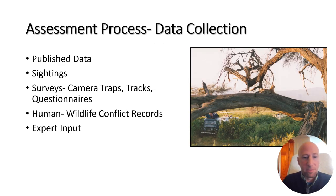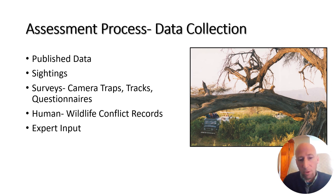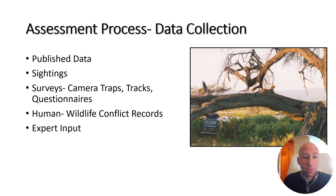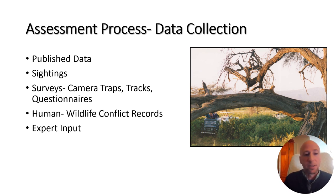For the assessment, we use a variety of data: published data, sightings, surveys including camera traps, spoor or tracking surveys, questionnaires, human-wildlife conflict records, and expert input. For the 2016 assessment we had 1,300 sources. The current assessment has 1,750. Of those 450 additional sources, all of them are for the African subspecies, because most of the subspecies across Asia have already done their own assessments, so we're using information directly from those assessments to update our current global status assessment.